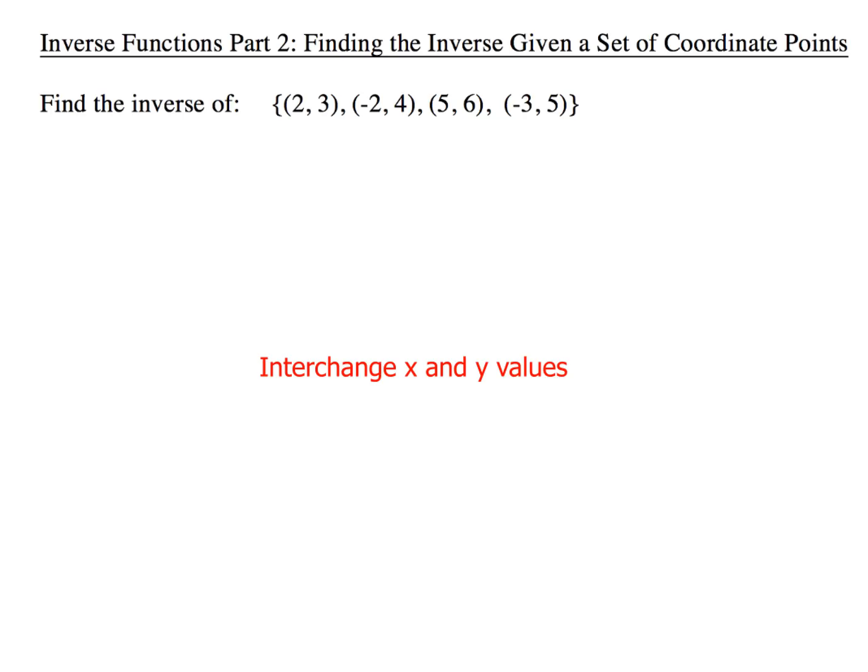Now for part 2. Same kind of idea. Inverse functions: Find the inverse given a set of coordinate points. Well, we've got 1, 2, 3, 4 sets of coordinate points. So we're going to just interchange our x and y values. So if we do that to our first one, we'll get 3, 2.